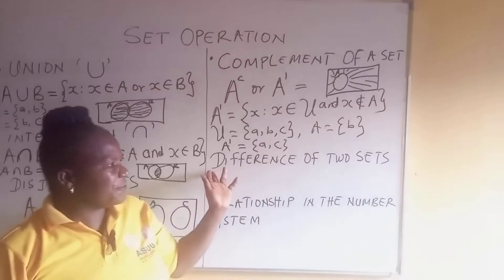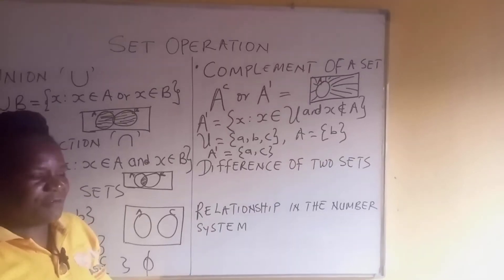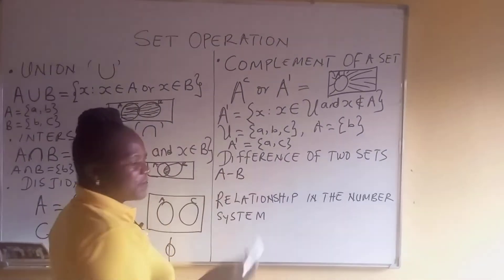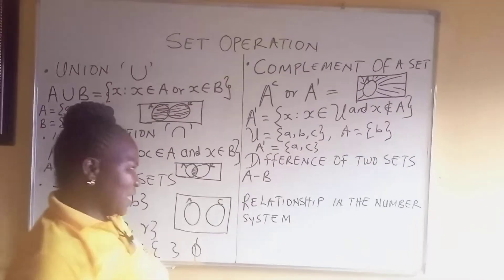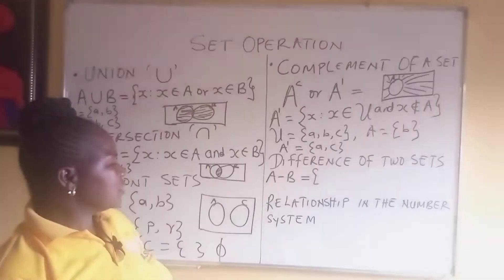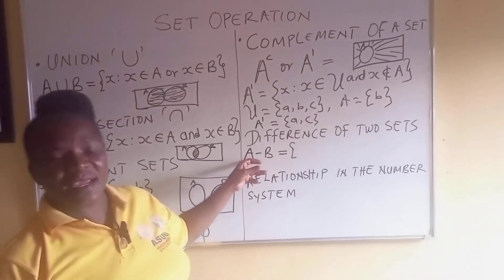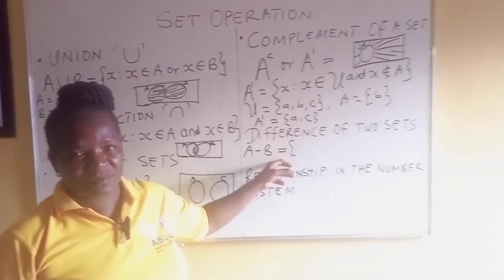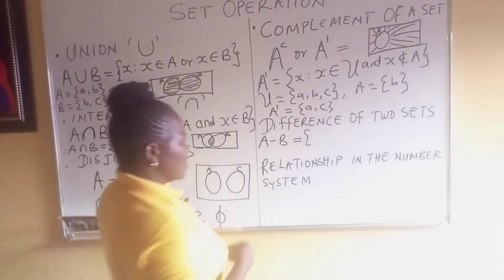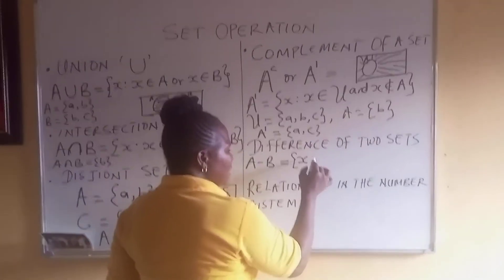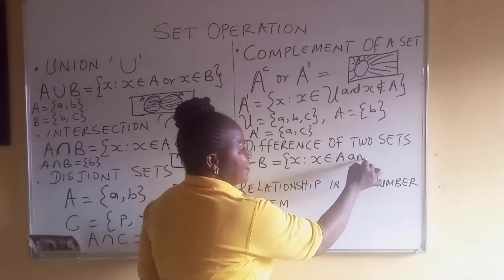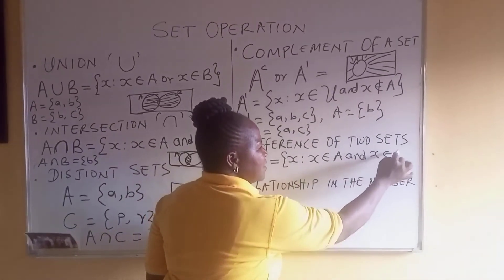Now we talk about the difference of two sets. A difference B — what does that mean? We mean those elements in A that are not in B. Mathematically, it is the set of X such that X is in A and X is not in B.